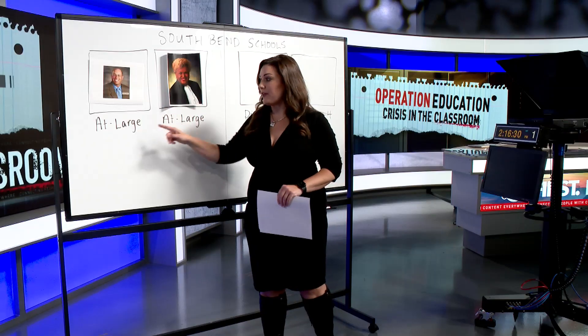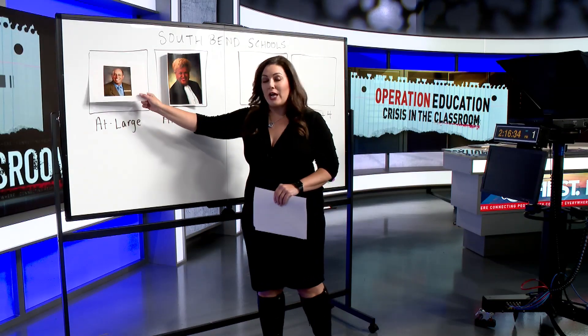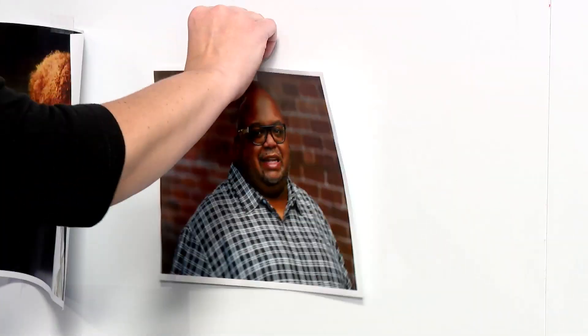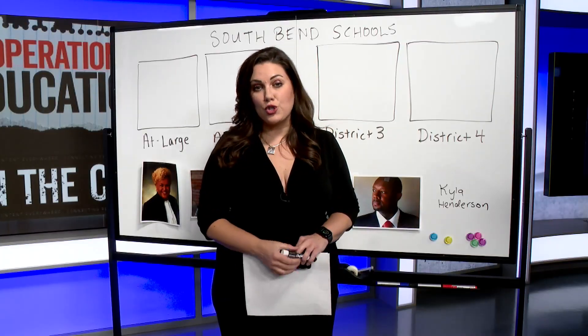John Anella and Jeanette McAuliffe are currently serving on the school board in these at-large positions. John Anella is not running for school board. Jeanette McAuliffe is, along with Marcus Ellison, George Jones, Gabriel Kempf, Lynn King, and Kyla Henderson. Henderson told me she's decided to drop out of the race.